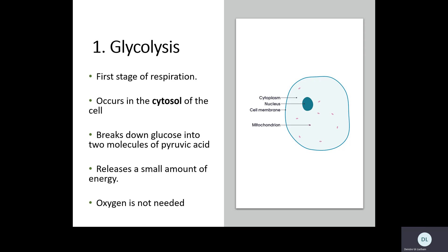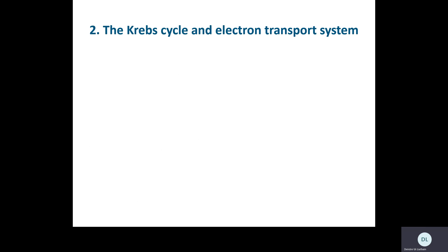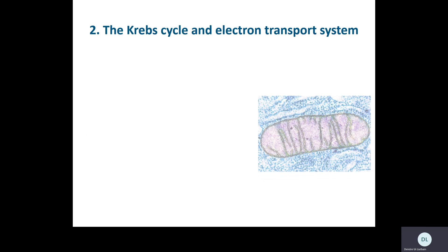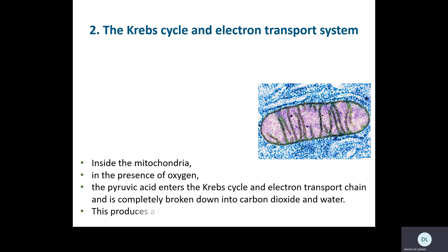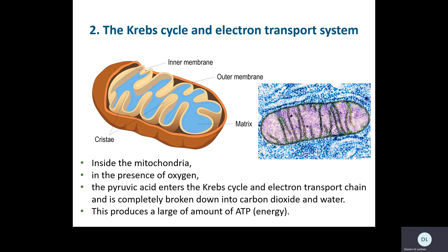To finish the process and break glucose all the way down to carbon dioxide and water — not just to pyruvic acid — we need the second stage. The second stage is called the Krebs cycle and electron transport system. You just need to know of their existence. If oxygen is present, the pyruvic acid goes on through these stages — the Krebs cycle and the electron transport system — and they happen inside the mitochondrion.